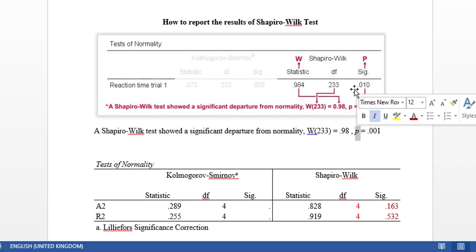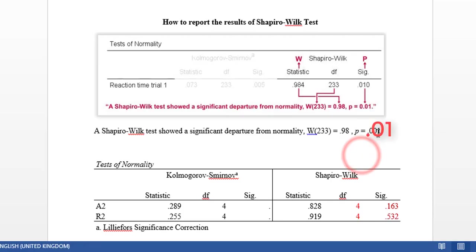And therefore we can say the data is not normally distributed because the null hypothesis is that there is no statistically significant difference in distribution, whereas the alternative hypothesis is that there is a statistically significant difference in the distribution.